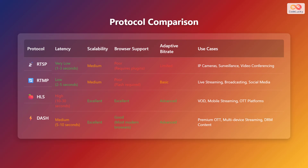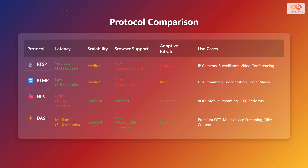Now let's compare these protocols to understand their strengths and weaknesses. RTSP has very low latency but medium scalability and poor browser support, best for IP cameras and surveillance systems. RTMP has low latency and medium scalability but poor browser support, requiring Flash, and is suitable for live streaming and social media. HLS has high latency but excellent scalability and browser support, making it ideal for video on demand and OTT platforms. DASH offers medium latency, excellent scalability, and good browser support compatible with most modern browsers, used for premium OTT content and multi-device streaming with DRM.